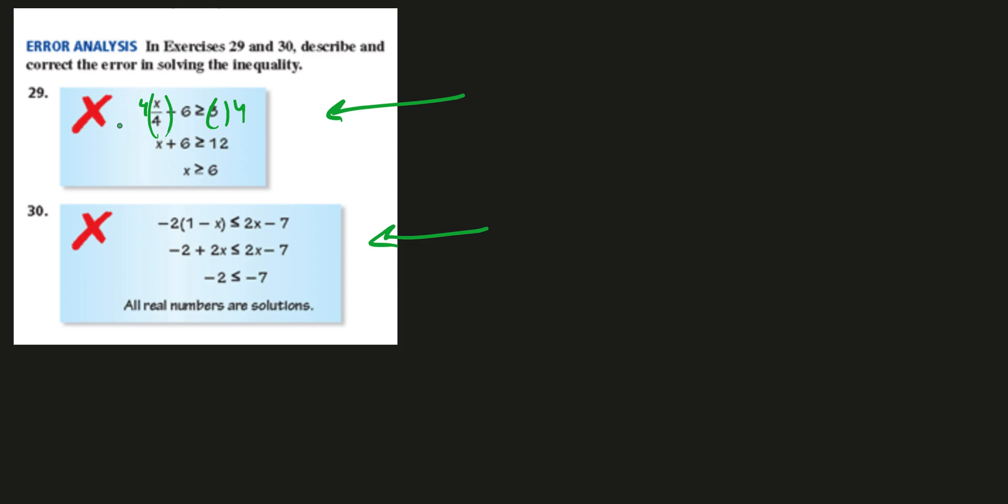I mean that you have to do, whatever you do to one side of the equation, the entire equation, you have to do to the entire other equation. This is only something that he's doing, he or she is doing to one part of the equation, one part of the side of this side of the equation. You can't do that.